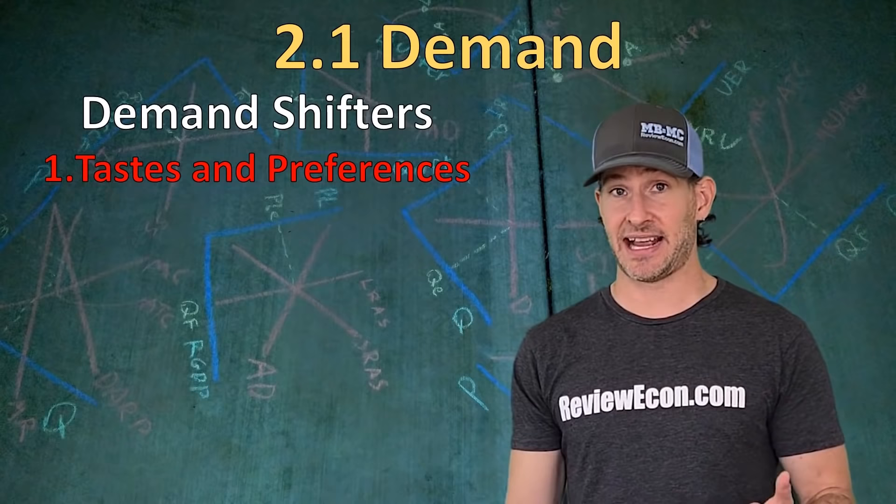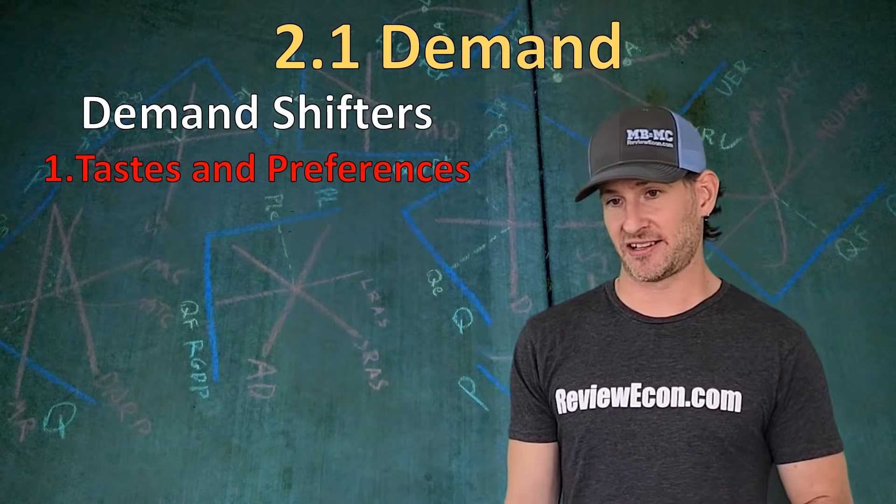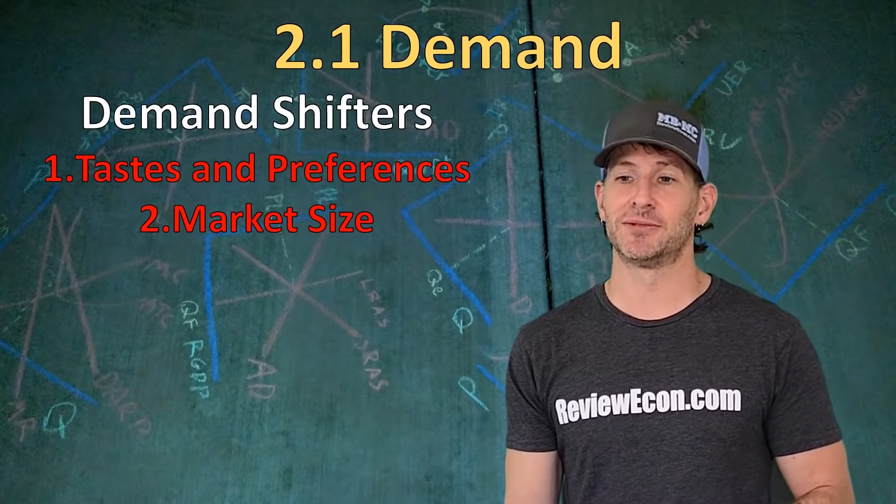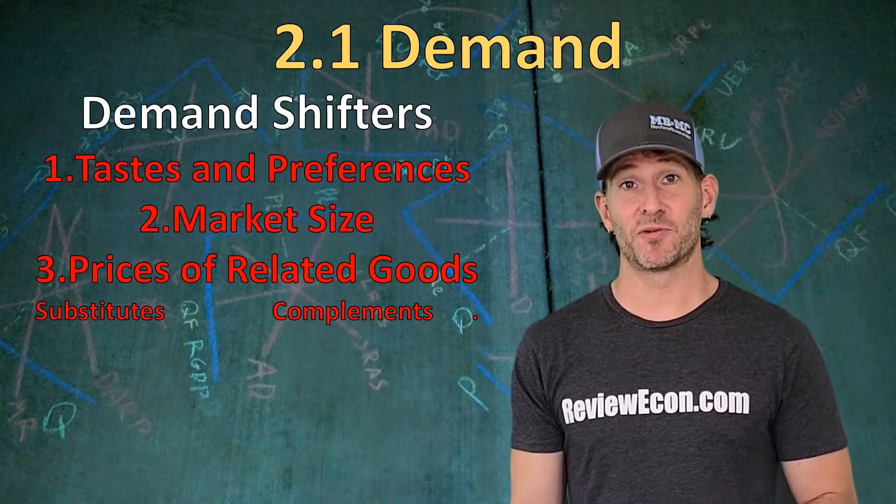If there's a decrease in tastes and preferences — like something becomes unpopular or falls out of fashion — that will cause a decrease in demand, a shift to the left. If there are more buyers, also called market size, that will cause an increase in the demand for a product. If there are fewer buyers available, that will cause a decrease in demand.